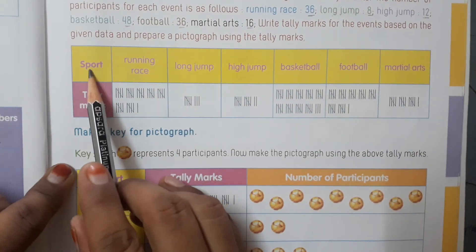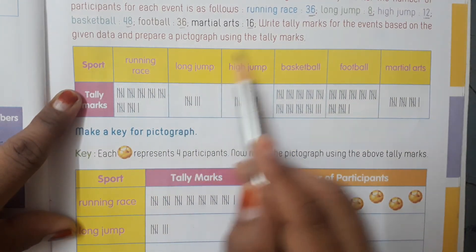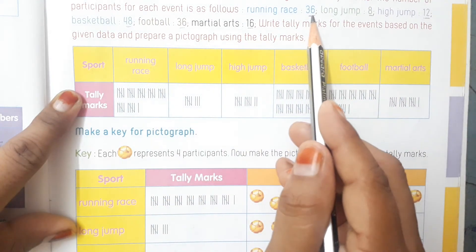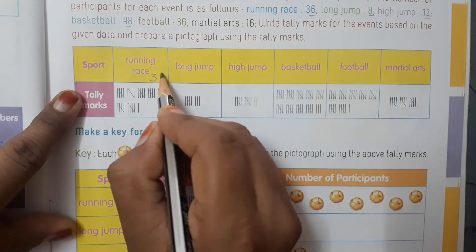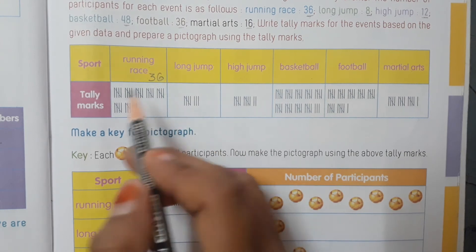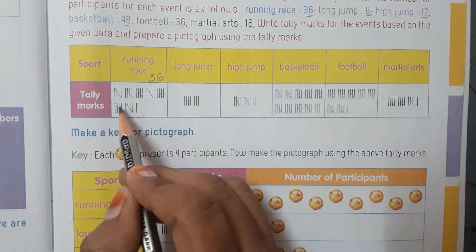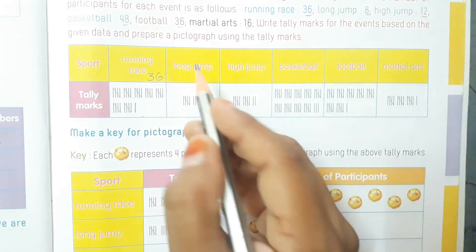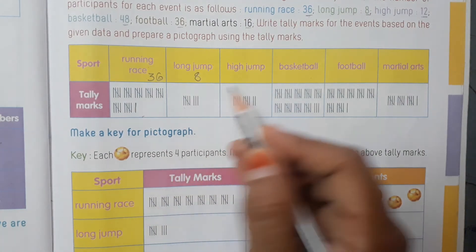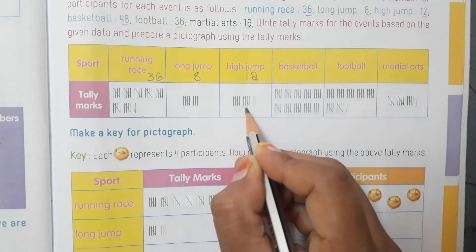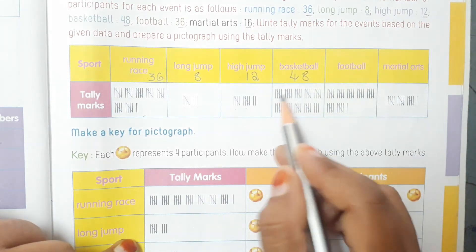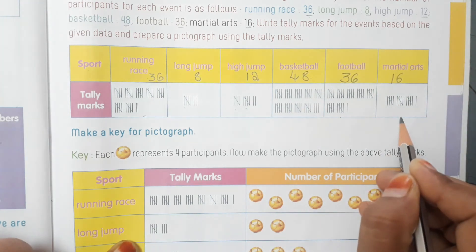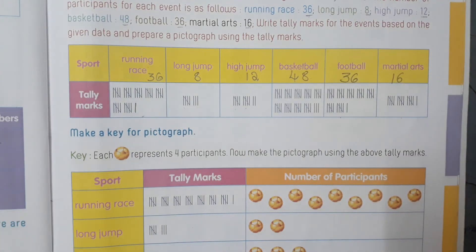The sports listed are running race, long jump, high jump, basketball, football, and martial arts. Running race has thirty-six participants: five plus five is ten, up to thirty-five, plus one equals thirty-six tally marks. Long jump: eight tally marks. High jump: twelve — ten plus two. Basketball: forty-eight tally marks. Football: thirty-six. Martial arts: sixteen tally marks. Using these tally marks, you have to make a pictograph.